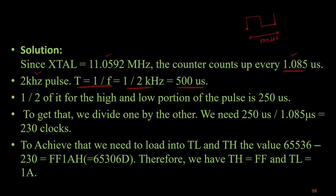For a square wave, the on duration and off duration should each be 250 microseconds, giving a 50% duty cycle. So the delay we need to create is 250 microseconds. To find the number of clock cycles, we divide 250 microseconds by 1.085 microseconds, which gives approximately 230 clocks.